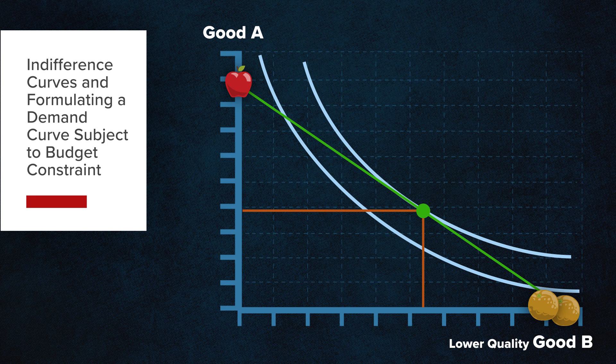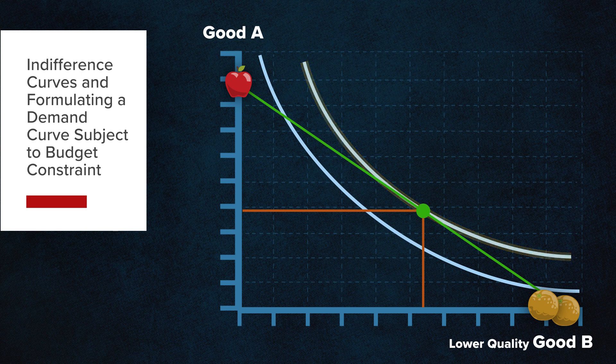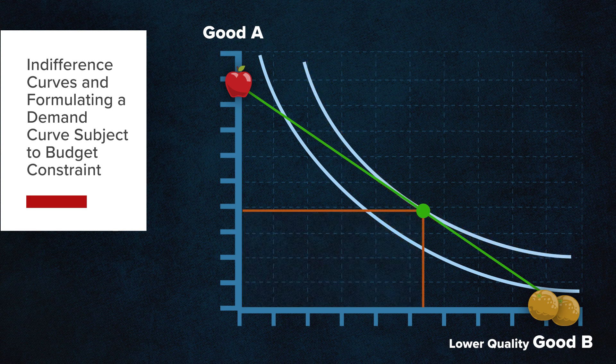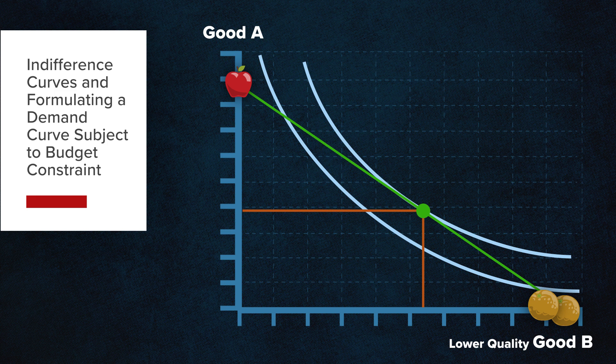Notice too that while the combinations yielding greater satisfaction move to indifference curves with higher utility, the budget constraint remains the same. However, the overall utility derived by the consumer has moved out to the right, illustrating greater satisfaction but from the same level of income.